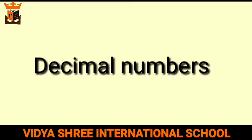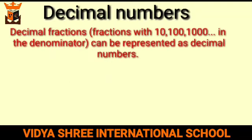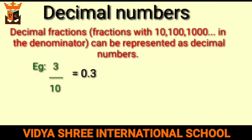Decimal numbers: decimal fractions — that is, fractions with 10, 100, or 1000 in the denominator — can be represented as decimal numbers. For example, 3 by 10 can be represented or read as 0.3. As a second example, 462 by 1000 can be written as 0.462.